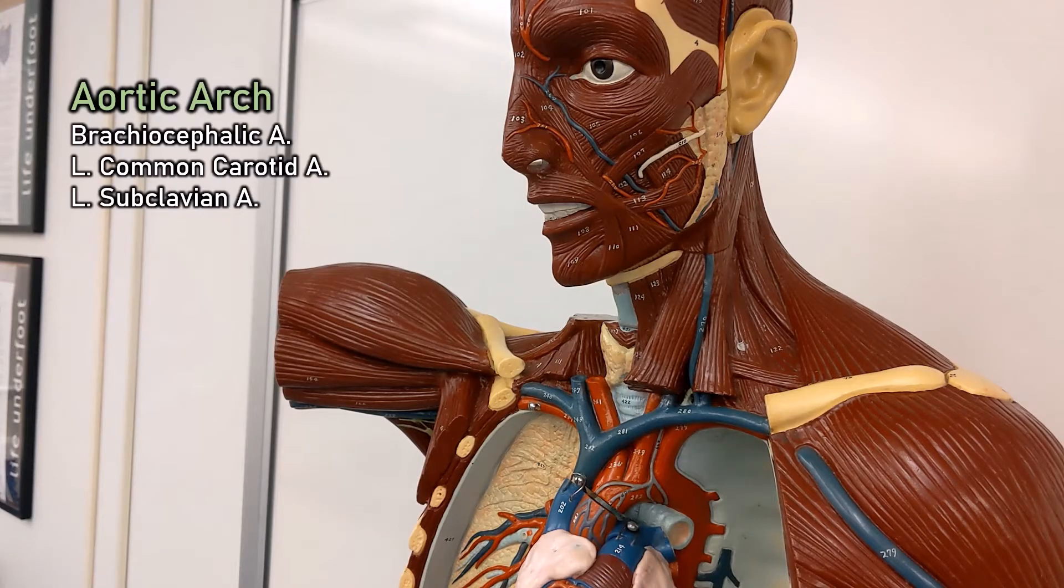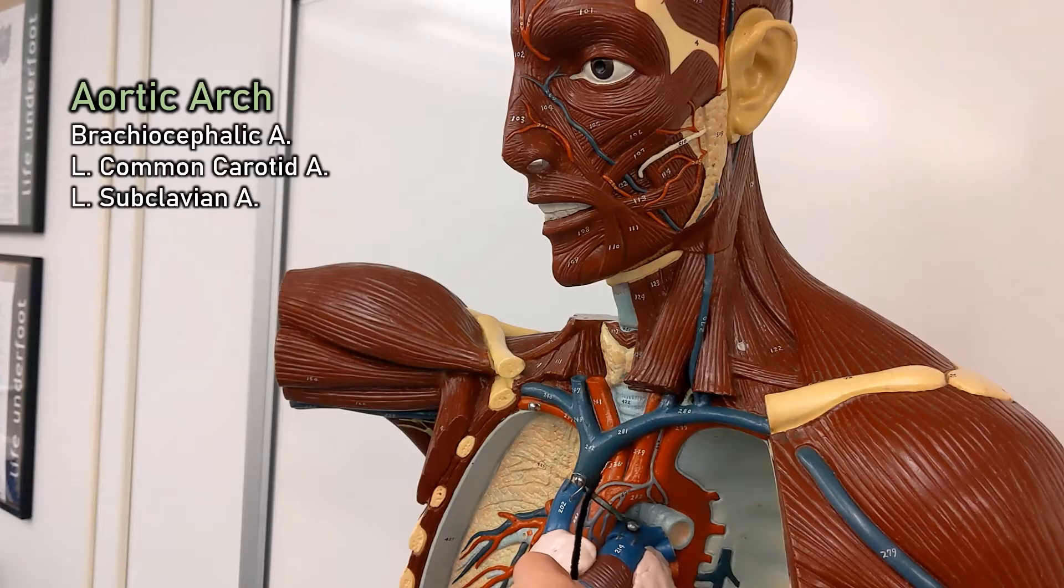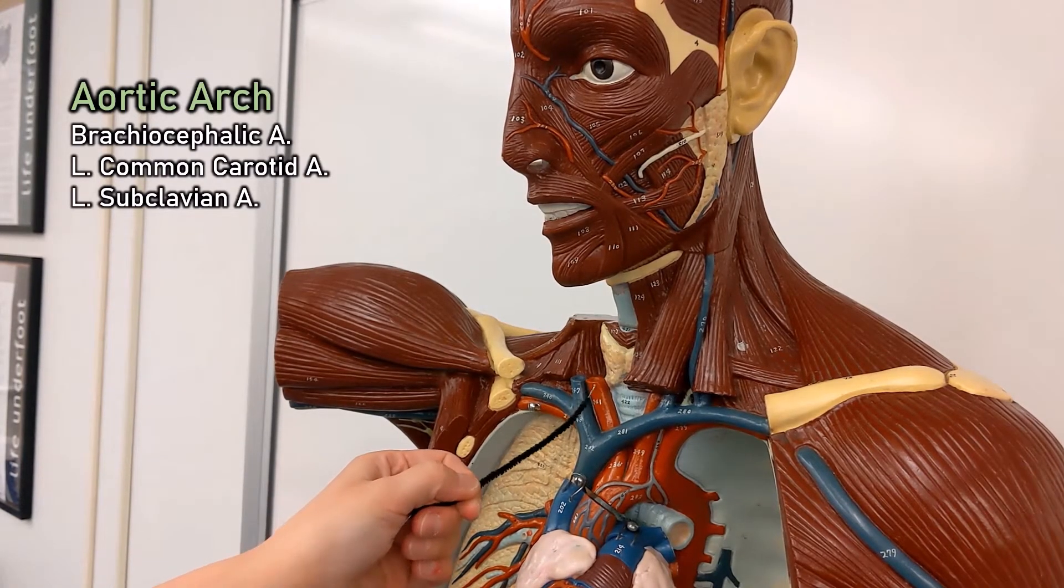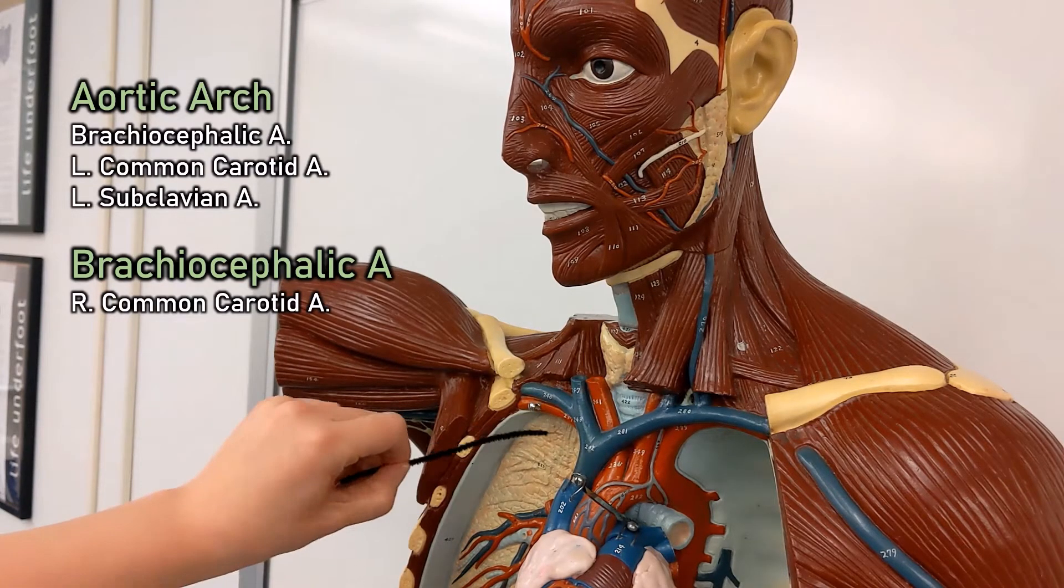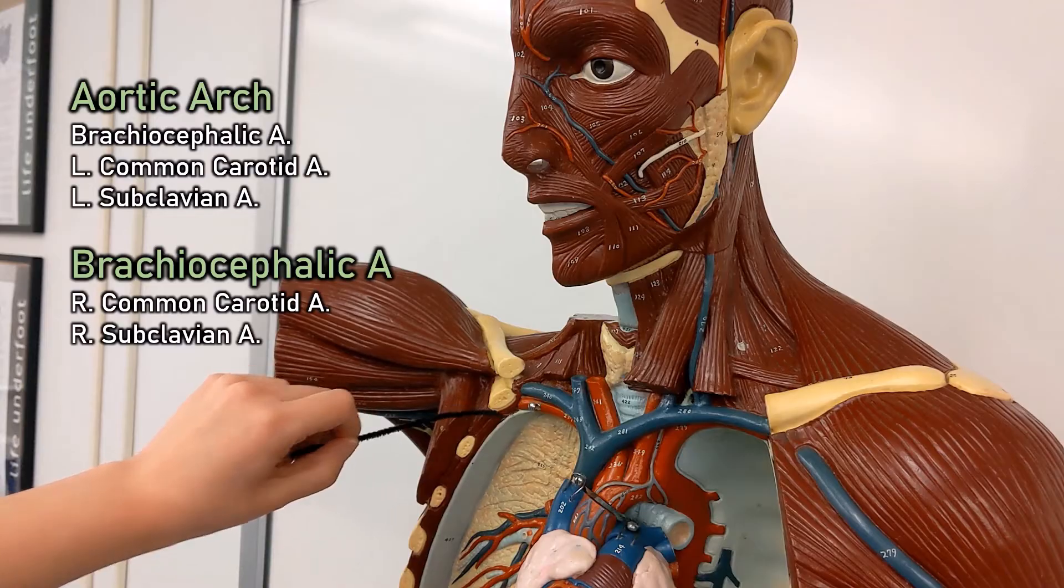This is just the brachiocephalic artery because there's only one of them, and it almost immediately splits into the right common carotid artery and right subclavian.